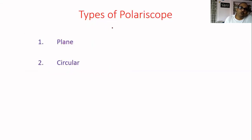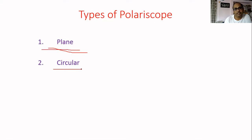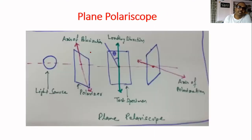There are two types of polariscope used in photoelasticity: one is called plane polariscope and another is called circular polariscope. Let us now see the plane polariscope.